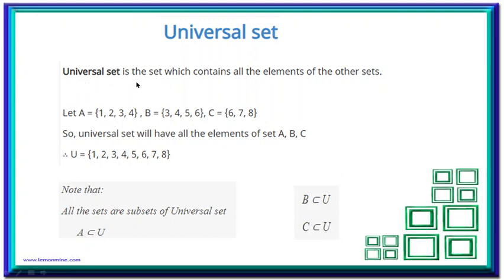Now, universal set. The universal set is the set which contains all the elements of other sets — it is the source set from which other sets are drawn. Let A, B and C be three different sets. The universal set U will have all the elements of A, B and C. For example, if U = {1,2,3,4,5,6,7,8}, then all elements of A, B and C can be found in U. Note that all sets are subsets of the universal set: A ⊆ U, B ⊆ U, and C ⊆ U.